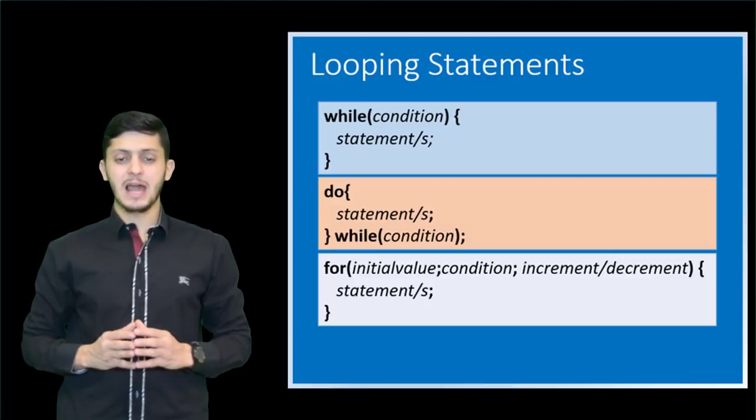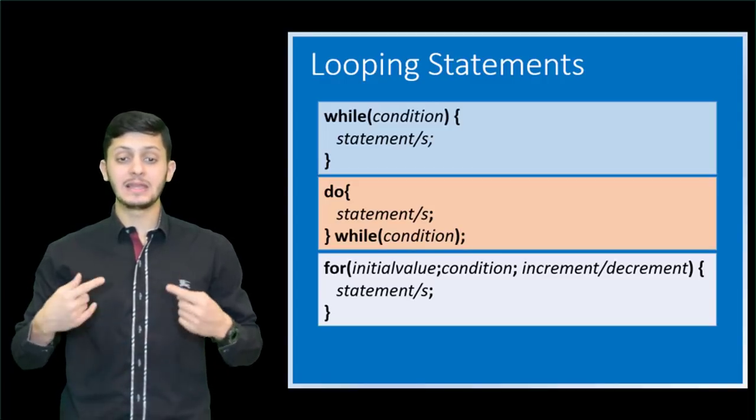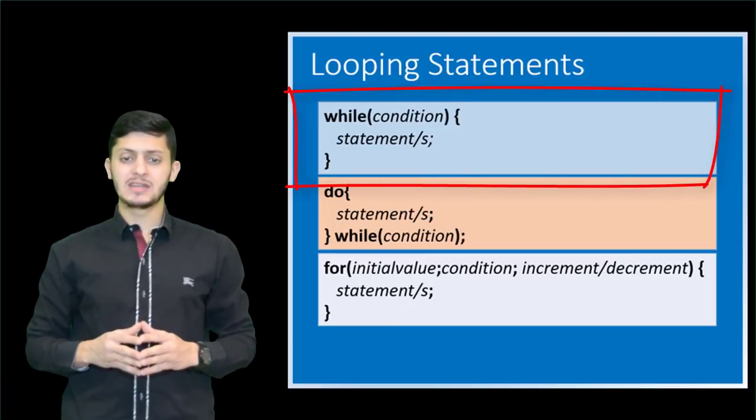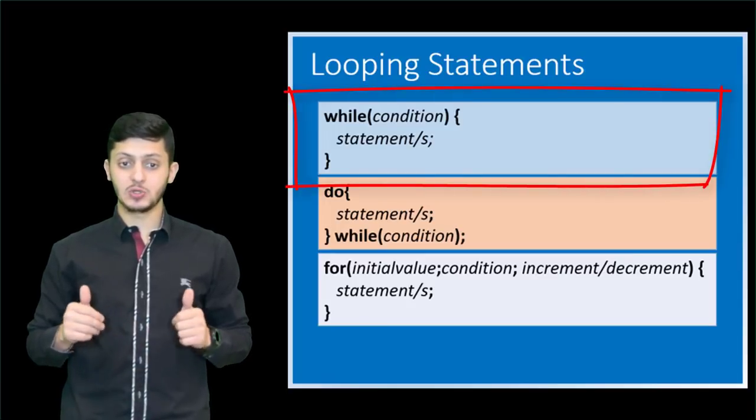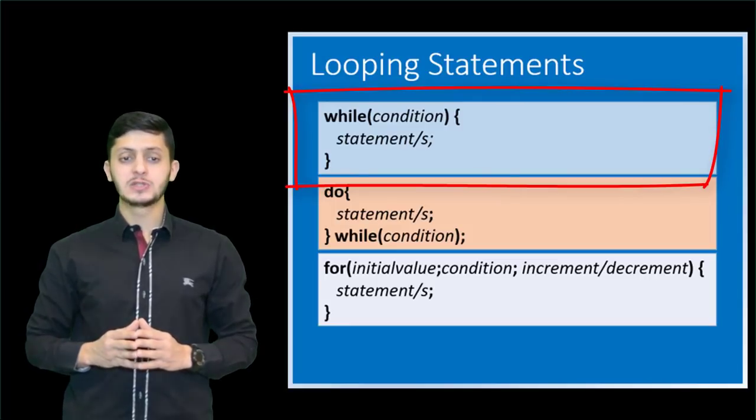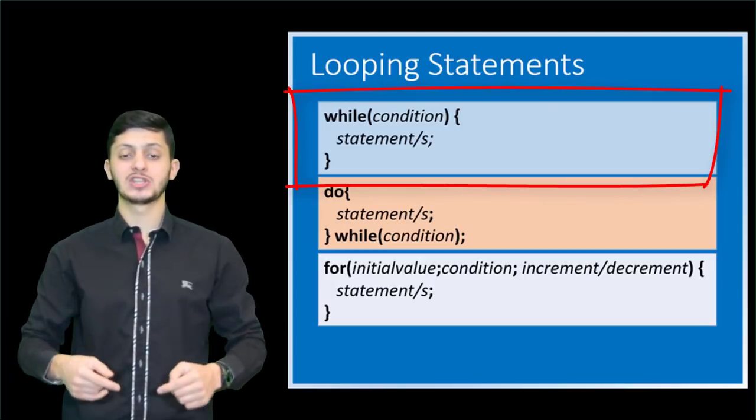Looping statements allow a block of code to be executed repeatedly based on a condition. A while loop first checks a condition. If it's true, it will execute a block of code. It will then check again the condition and will continue repeating the process while the condition is true.